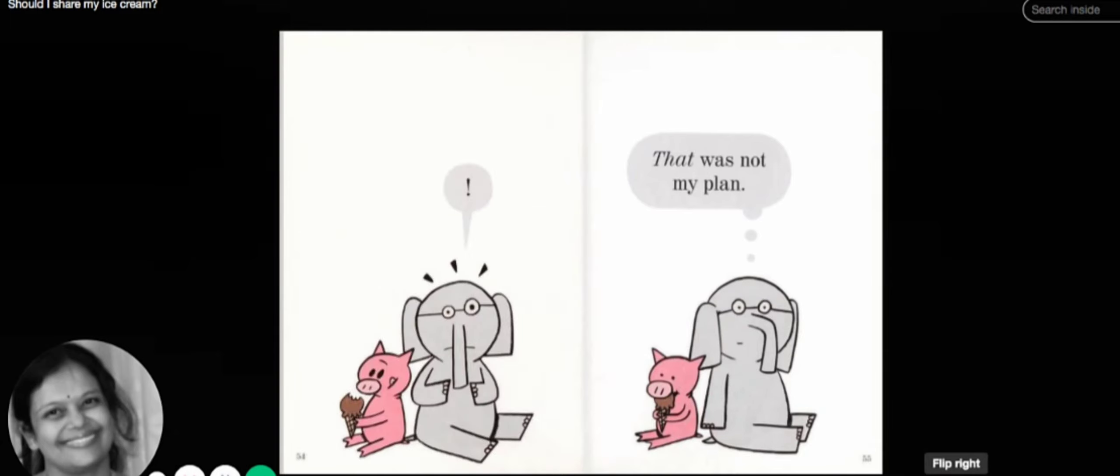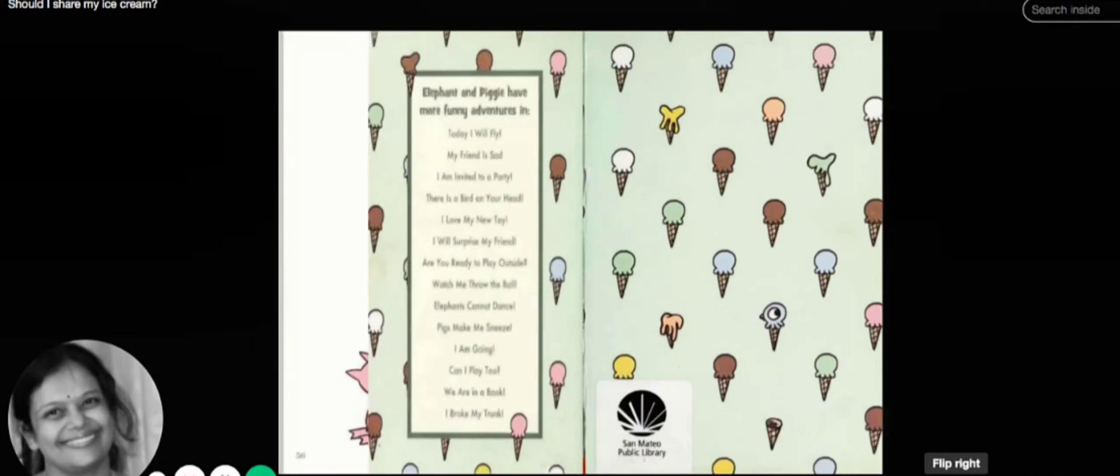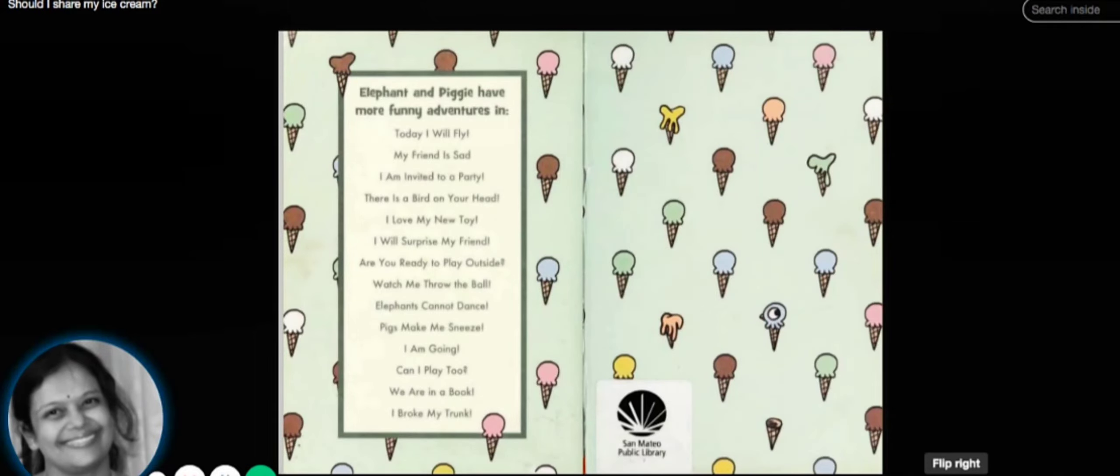Piggy takes another bite, but the elephant wants some more, so Piggy gives it to the elephant. The elephant takes a bite. That's the end of the story—that's how they share an ice cream! They're best friends, and it's always nice to share things with your best friends.